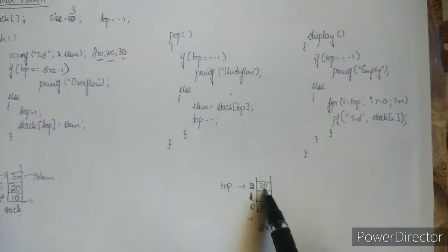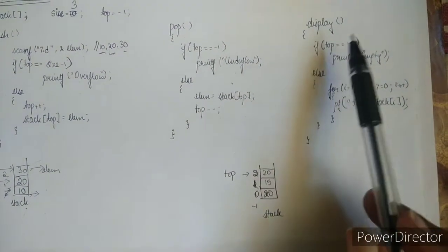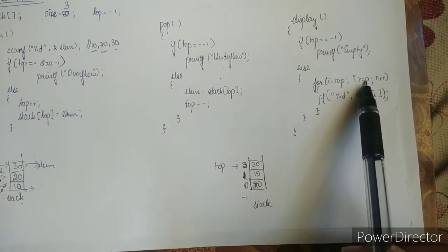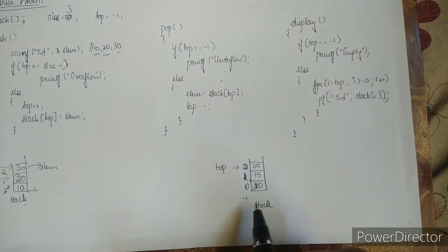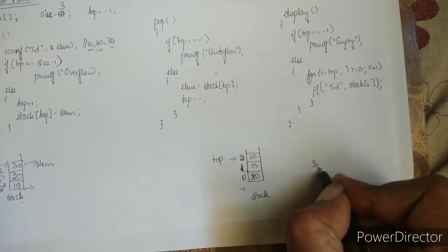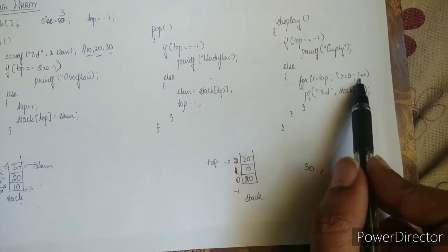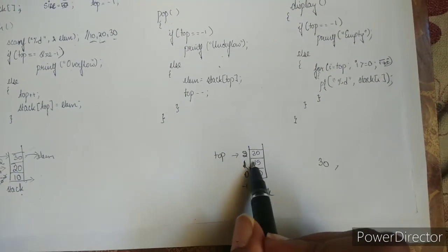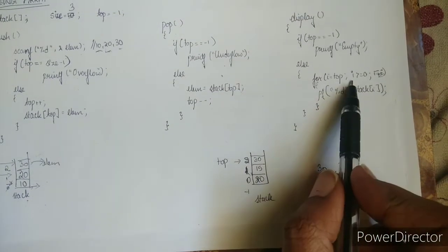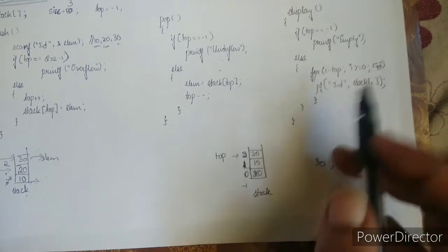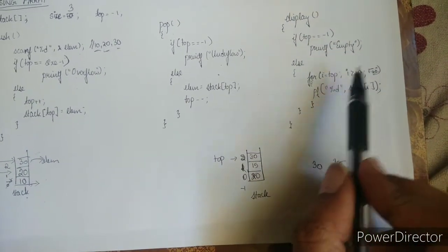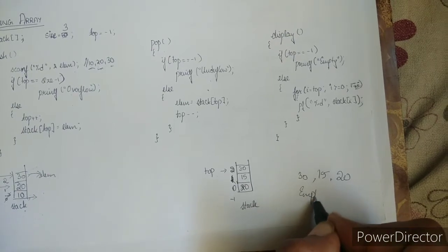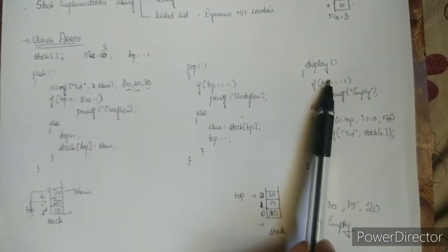Now display. Consider the stack with elements 10, 20, 30. If top equals minus 1, print empty — but top is at 2 so this condition is false. The for loop runs: for i = top (which is 2), i >= 0, decrement i. We print stack[i]: first stack[2] = 30, then decrement i to 1 and print stack[1] = 20, then decrement i to 0 and print stack[0] = 10. Decrementing again gives minus 1, so we exit the loop. That is the code for push, pop, and display of a stack using an array.